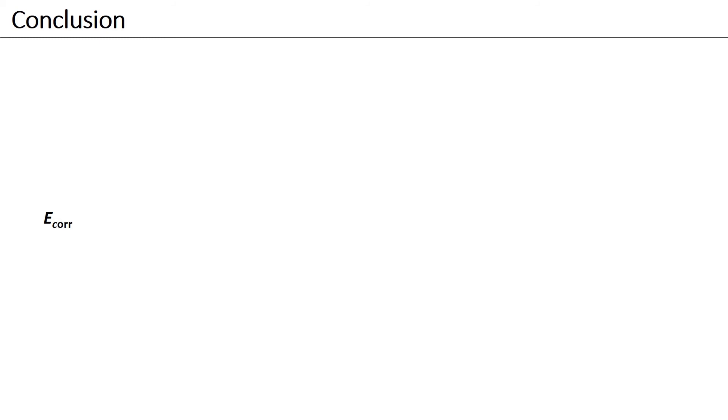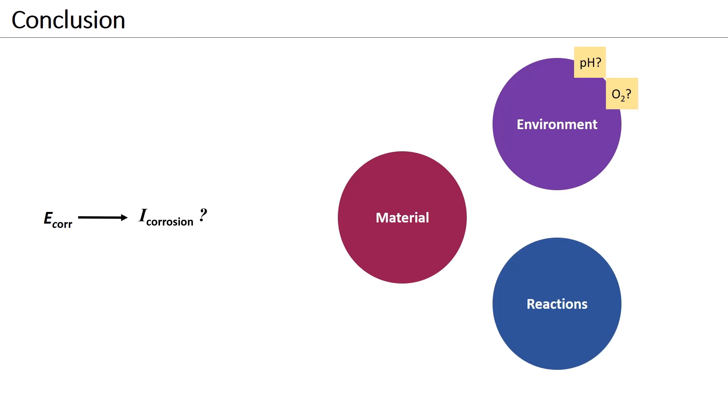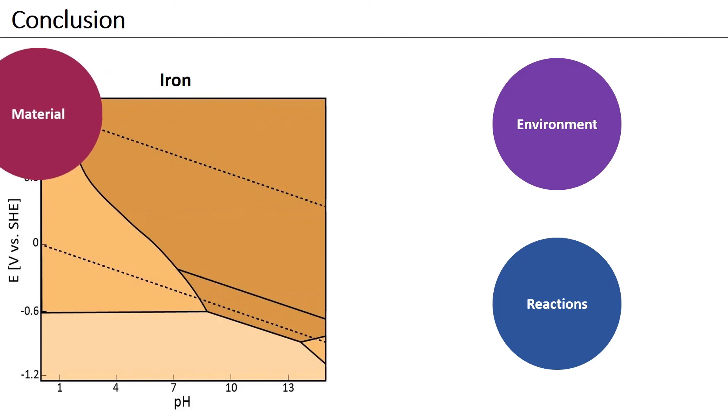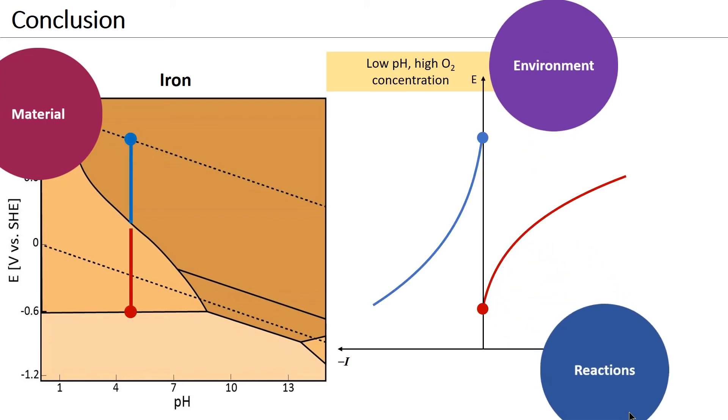However, the corrosion potential alone does not allow us to directly assess the corrosion state or the corrosion rate. To this aim, we have to consider the material, the environment and the possible reactions and their kinetics. As an example, let us consider the material iron. Imagine the environment has a low pH and a high oxygen concentration. For this combination of material and environment, we know the kinetics of the accompanying reactions and we can conclude that the corrosion rate is high. Different combinations of material and environment will lead to different corrosion states.